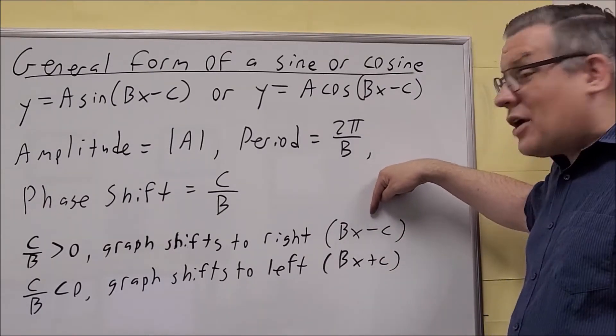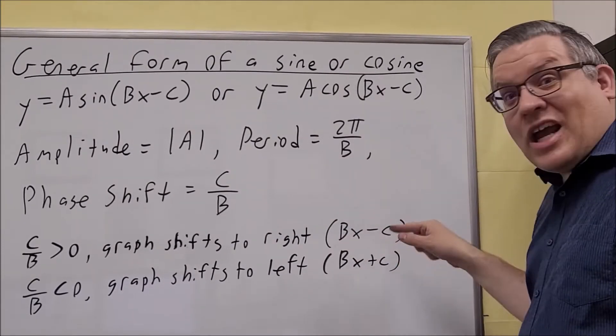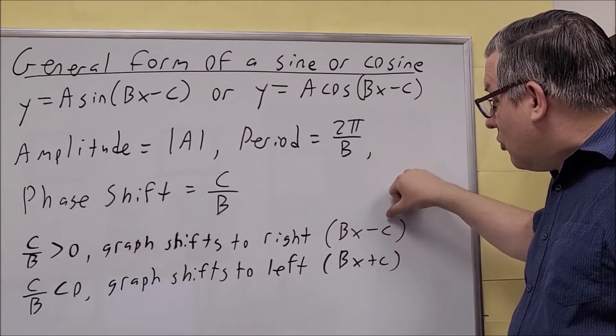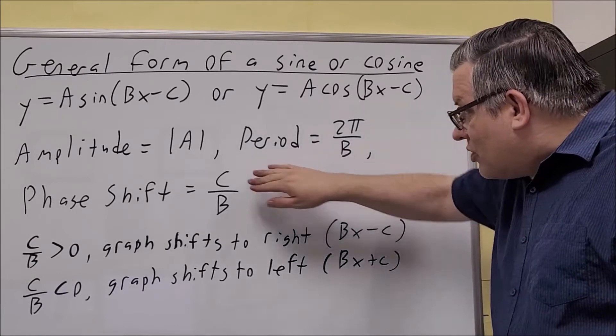So if you have Bx minus C, the graph is going to move to the right. So essentially you can do the opposite sign here when you want to figure out what the phase shift is. So it's minus, so we'll turn it into a plus. You're still doing C over B.